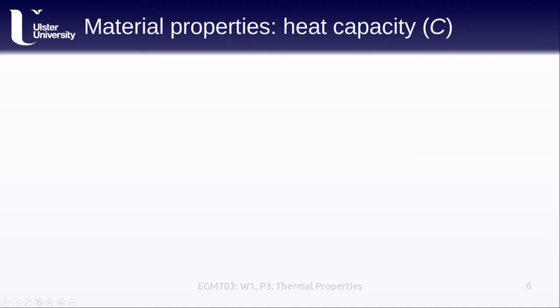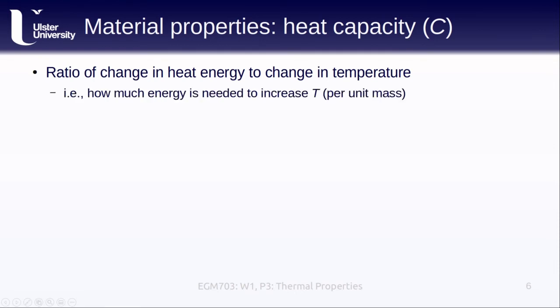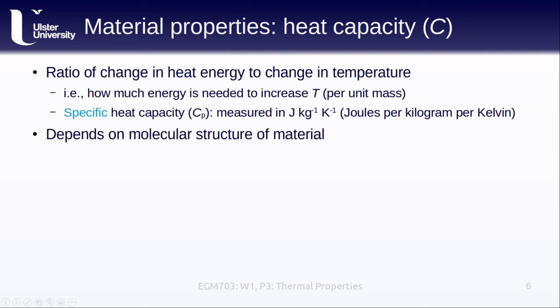The first material property that we'll cover is heat capacity, which is normally denoted as a capital C. This is defined as the ratio of the change in heat energy to the change in temperature of the material. In other words, it tells us how much energy we have to transfer to a material in order to raise its temperature. We define the specific heat capacity in terms of the per unit mass, as more massive objects typically require more energy to raise their temperature. The units of specific heat capacity are joules per kilogram per kelvin. Again, the change in energy divided by the mass divided by the change in temperature.